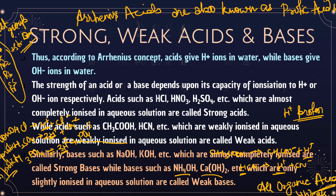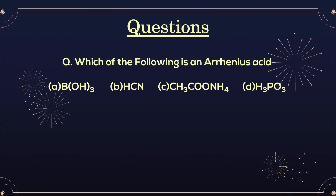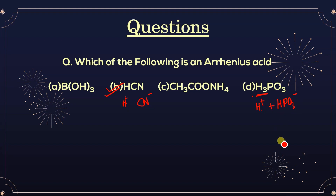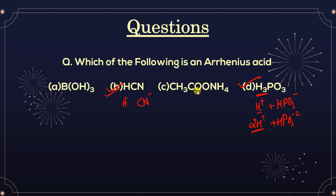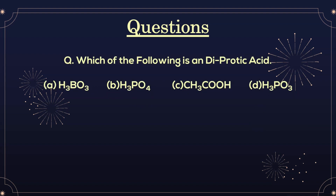Practice question: Which of the following is an Arrhenius acid? An Arrhenius acid gives H⁺ ions. HCN can give H⁺ + CN⁻, and H3PO4 can give H⁺ + HPO4²⁻. So both HCN and H3PO4 are Arrhenius acids — options B and D are correct. The other options cannot give H⁺ ions and are therefore not Arrhenius acids.